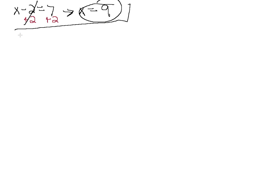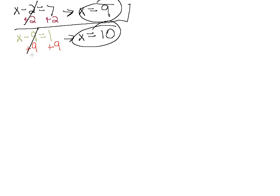Let's look at another one. Let's say we have x minus 9 equals 1. We want to get x on one side and everything else on the other side, so we add 9 to this side which will cancel out the minus 9. Whatever we do on one side we have to do on the other side. This cancels and we get x equals 1 plus 9, which is 10. So x equals 10. If we plug in 10, this equation will remain true.